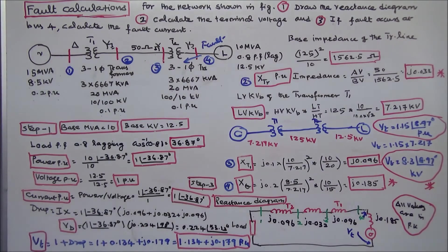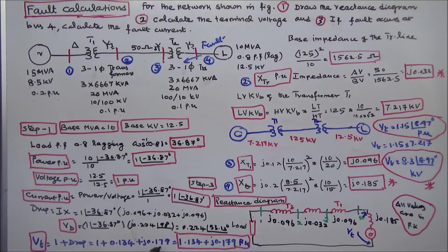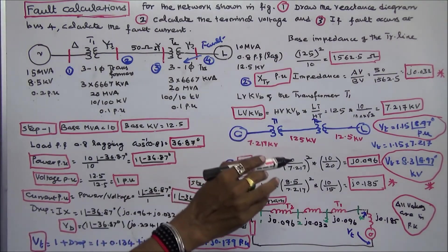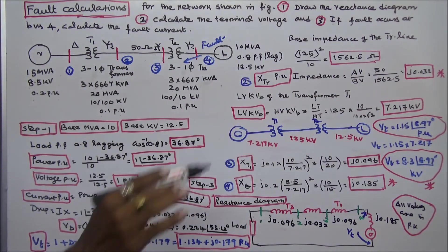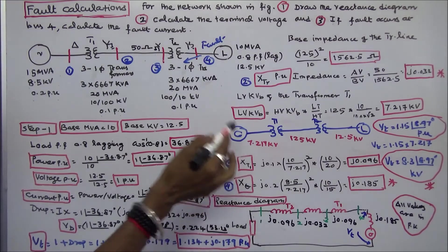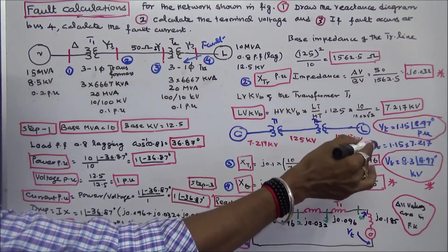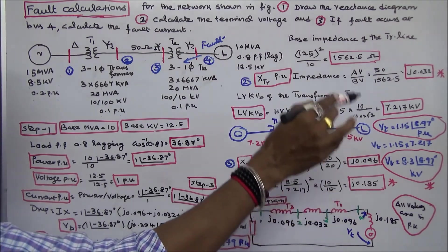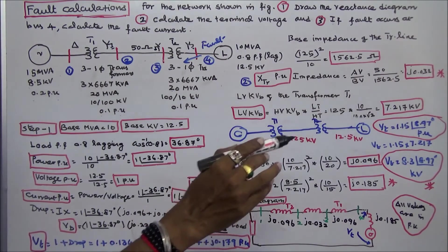In polar form the voltage drop is 0.224∠53.13°; in rectangular form it is 0.134 + j0.179. Terminal voltage Vt = per unit voltage plus drop = 1 + 0.134 + j0.179 = 1.134 + j0.179 per unit. In polar form, Vt = 1.15∠8.97° per unit. Actual terminal voltage = 1.15 × 7.217 = 8.3 kV∠8.97°.